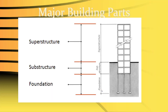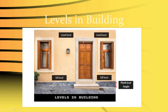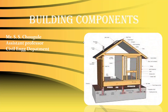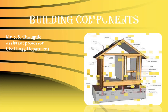Buildings are basically divided into two major parts: above the plinth level is called the superstructure, and below it is called the substructure, which includes the foundation. Here you can see the plinth level — above it is the superstructure and below it is the substructure.